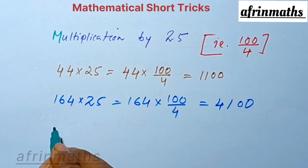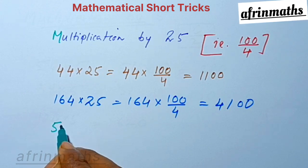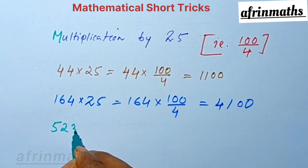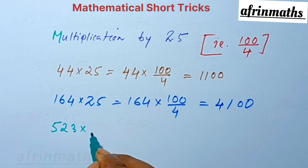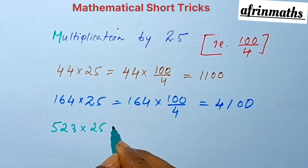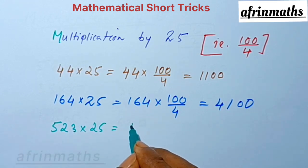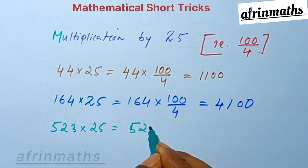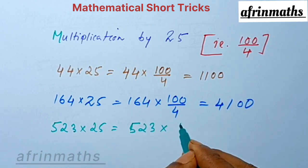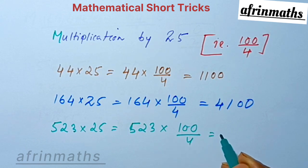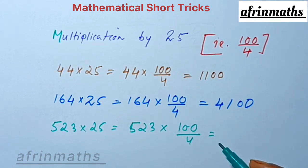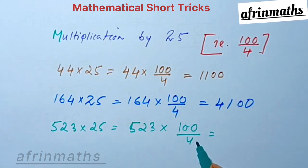Let us check another number. It is 523 multiplied by 25. We can write 523 into 100 by 4. That is, if we divide 523 by 4...